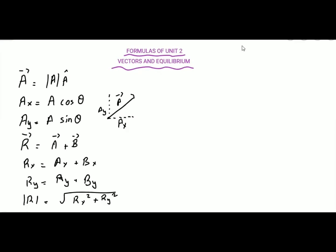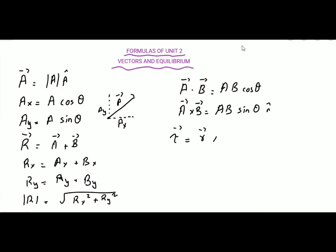We also studied the dot and cross products, where we multiply two or more vectors together. The dot product gives a scalar quantity: A·B = AB cos θ, so it has no direction. The cross product gives a vector quantity with both magnitude and direction. We also studied torque, which is the cross product of the position vector and force: τ = RF sin θ into the unit vector.